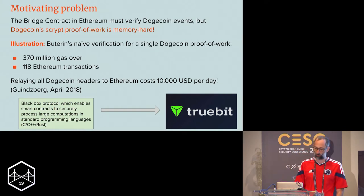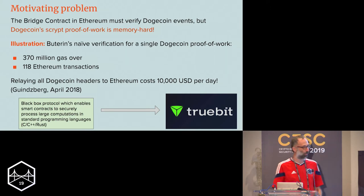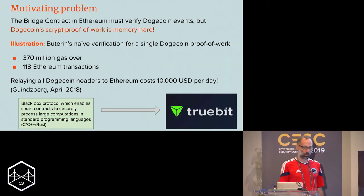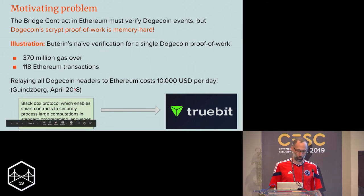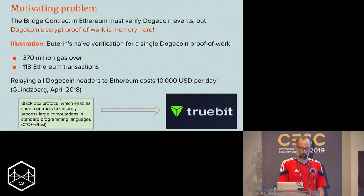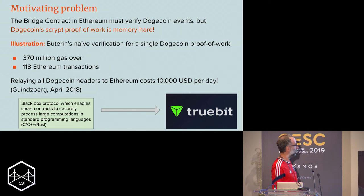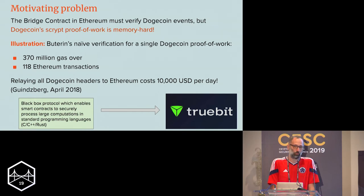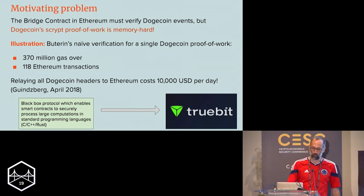That was really the motivation for Truebit — to be able to check a Dogecoin proof of work inside of an Ethereum smart contract. It'll just be a black box for this talk, but the purpose of the protocol is to enable smart contracts to securely process large computations in standard programming languages, including the one in which the Scrypt Dogecoin proof of work is written.